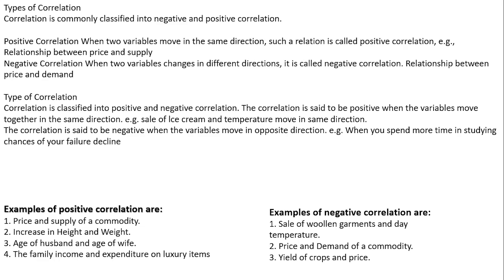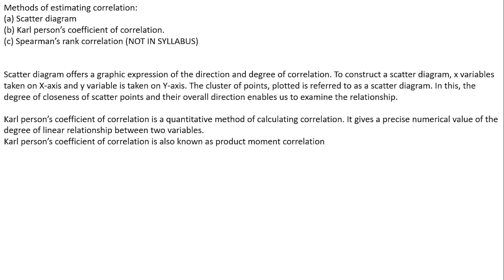Now, we will talk about how many methods there are to estimate, i.e., calculate, correlation. There are three methods: one is the Scatter Diagram, the second is the Karl Pearson Coefficient of Correlation, and the third is the Spearman Rank Correlation. We are not very sure if Spearman Rank Correlation is in our syllabus, but we will understand it once, because some schools have this method and some don't.